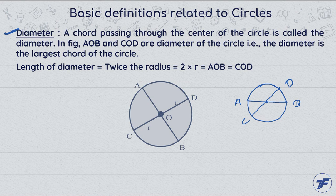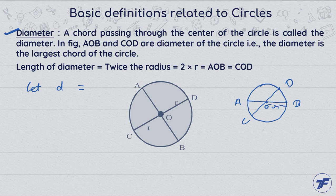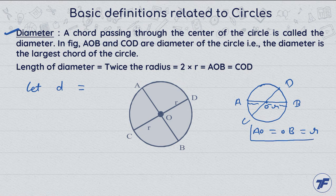there is a relation between the radius and the diameter of the circle. Let the diameter of the circle be denoted by small d. OA equal to OB equal to r by the definition of the circle. OA यानि point A भी center से equal distance पे और point B भी, it